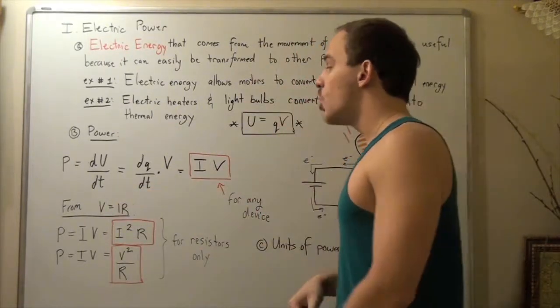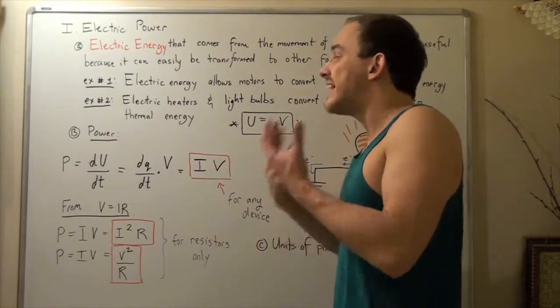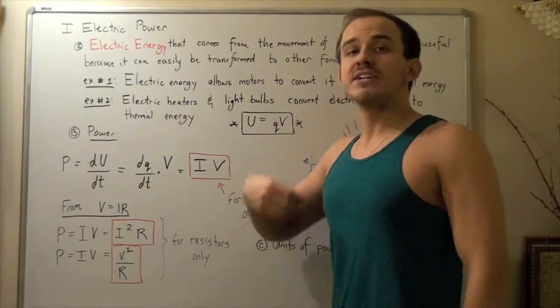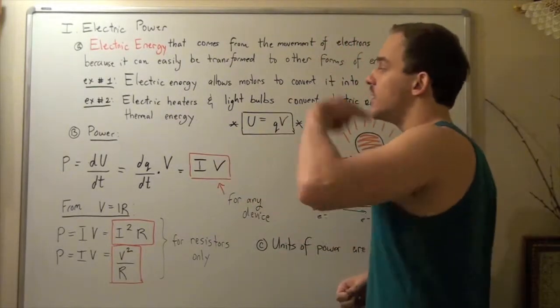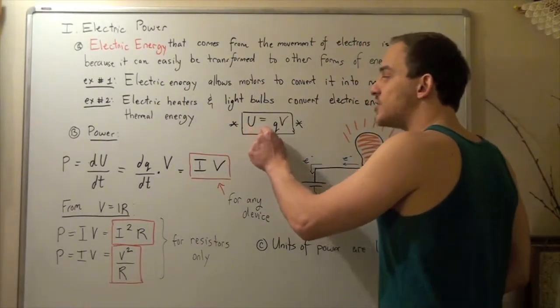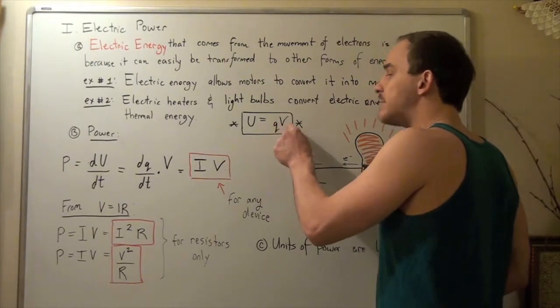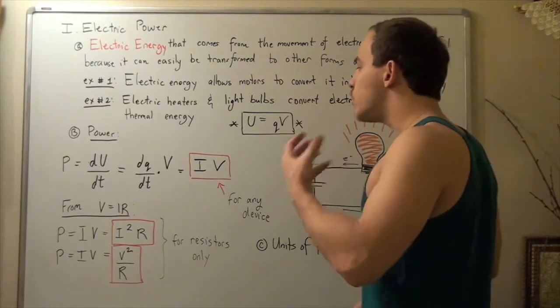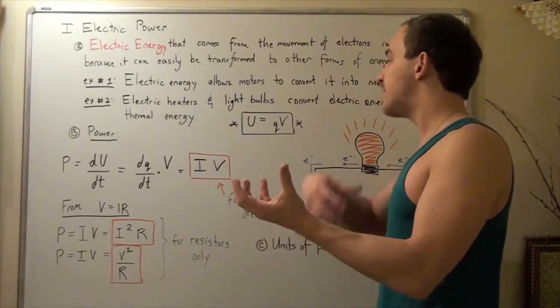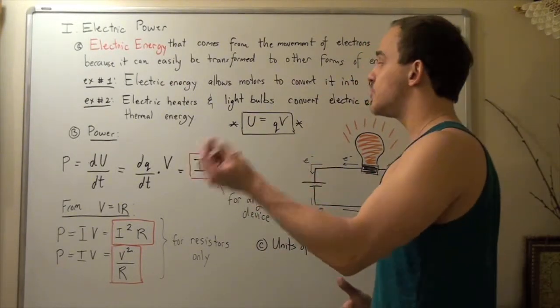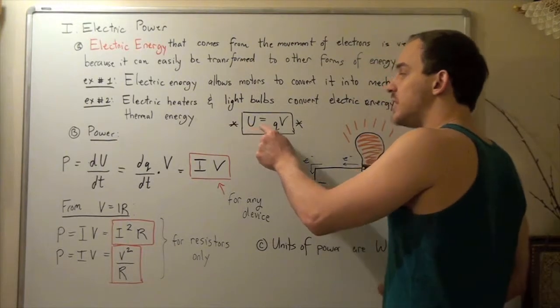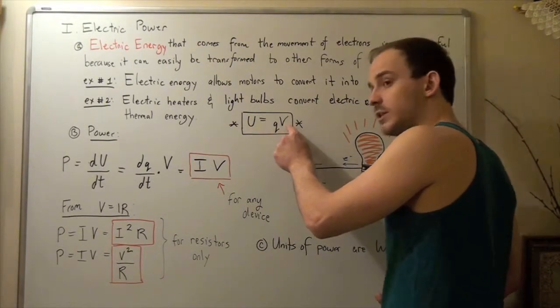Now recall what our energy, or electrical energy is when we talk about charge, or when we talk about voltage. Now we saw from another lecture that our change, or our energy, is equal to q times V. In other words, whenever we have a voltage, and whenever we have a charge, we have energy. And our energy is given, or electric energy is given by electric energy equals q times voltage.